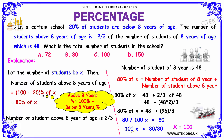So, X equals 80 divided by 80/100, which gives X = 100. Option C, 100, is your answer.